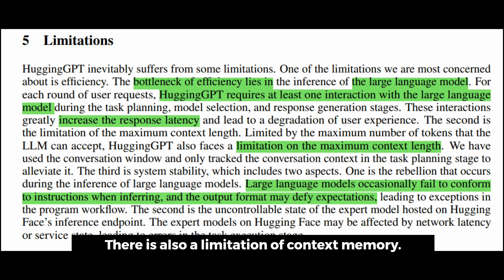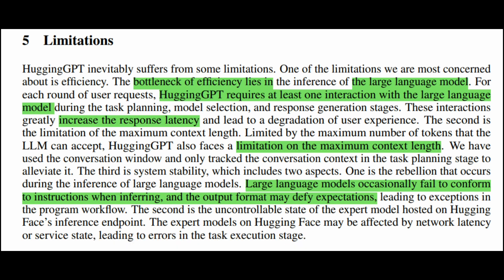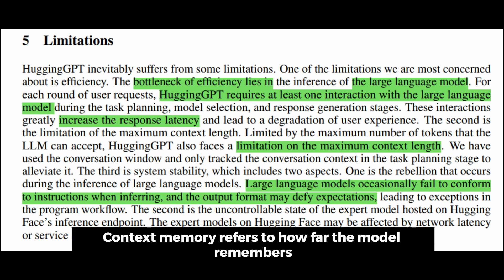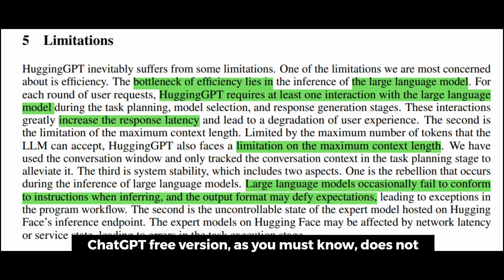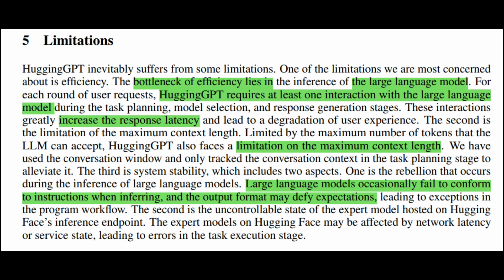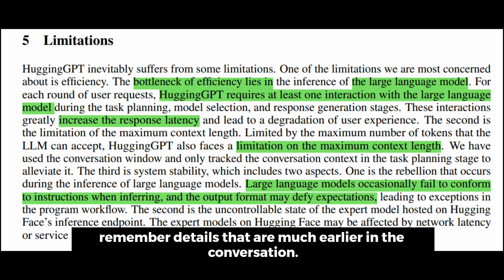There is also a limitation of context memory. Context memory refers to how far the model remembers our conversation. The ChatGPT free version, as you must know, does not remember details that are much earlier in the conversation.